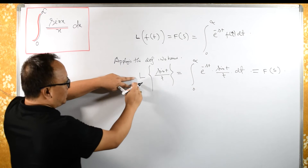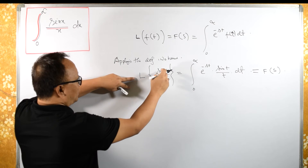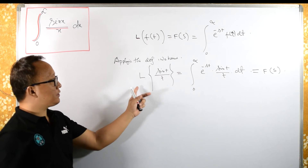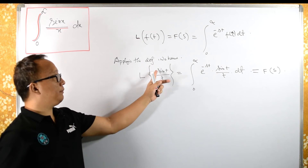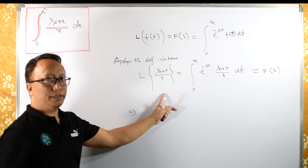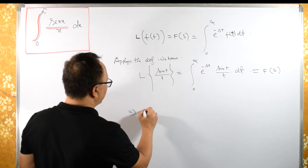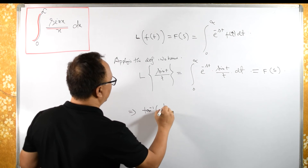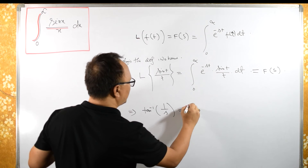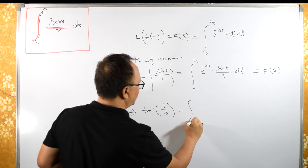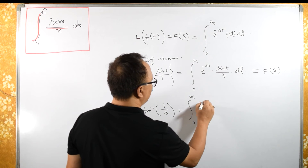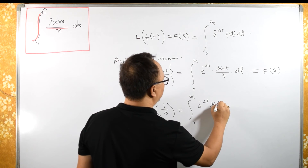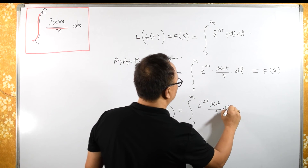Now, L{sin(t)/t} — as shown in my previous lecture — its result is arctan(1/s). Therefore, this equals arctan(1/s) = ∫₀^∞ e^(−st) · sin(t)/t dt.